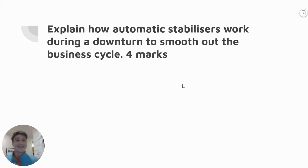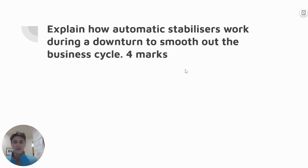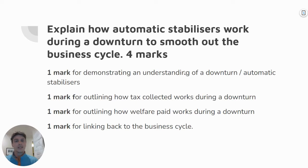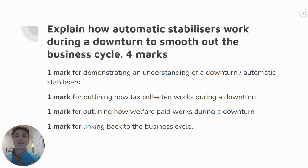Hello economics students, we've got an automatic stabilizer question here. You can read and pause it to work out where the marks are. It's worth four marks — a pretty standard question about how automatic stabilizers work in a downturn to smooth out the business cycle. It's pretty much straight from the dot point from the study design. The first mark is for demonstrating an understanding of what a downturn is, which is really important in automatic stabilizer questions, because the conditions in the economy will dictate what automatic stabilizers actually do.